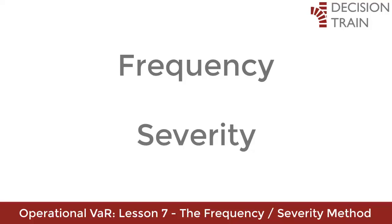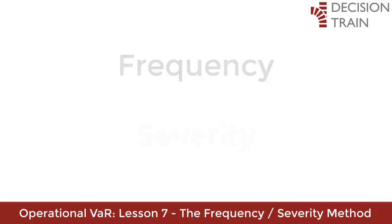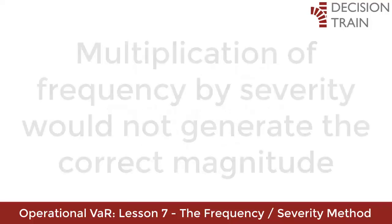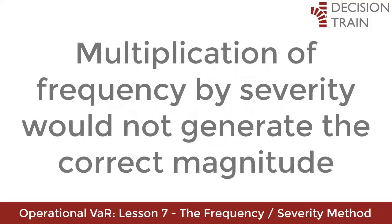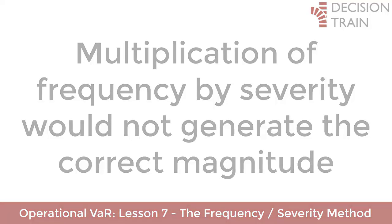This does not mean we should simply multiply frequency by severity to obtain the magnitude of the risk. As we will see when we introduce convolution, a simple multiplication of the number of events by their severity would not correctly generate the magnitude. A correct way to build a risk quantification model takes this into account by using the convolutional mathematical operation.